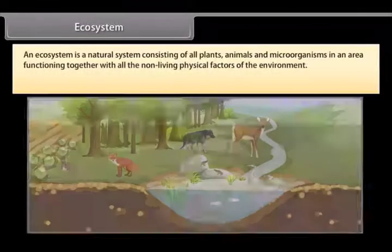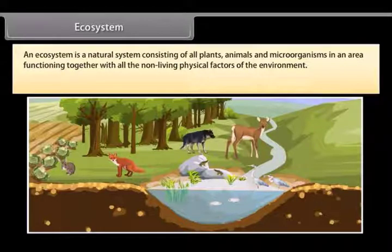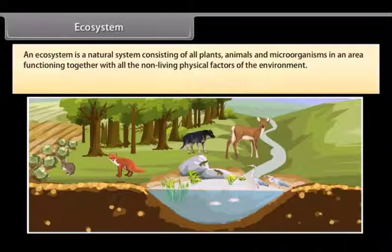An ecosystem is a natural system consisting of all plants, animals and microorganisms in an area functioning together with all the non-living physical factors of the environment.